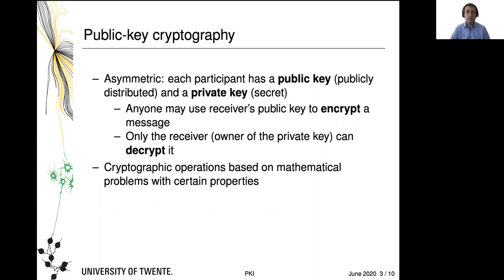The public key, as the name implies, may be public knowledge — it can be distributed to anyone. The private key must be kept secret by the owner. Anyone can use a receiver's public key to encrypt a message for them, but only the receiver, the owner of the private key, can decrypt it. Think of it as a letterbox: anyone can drop a letter in, but only the person who has the key to the letterbox can retrieve it.